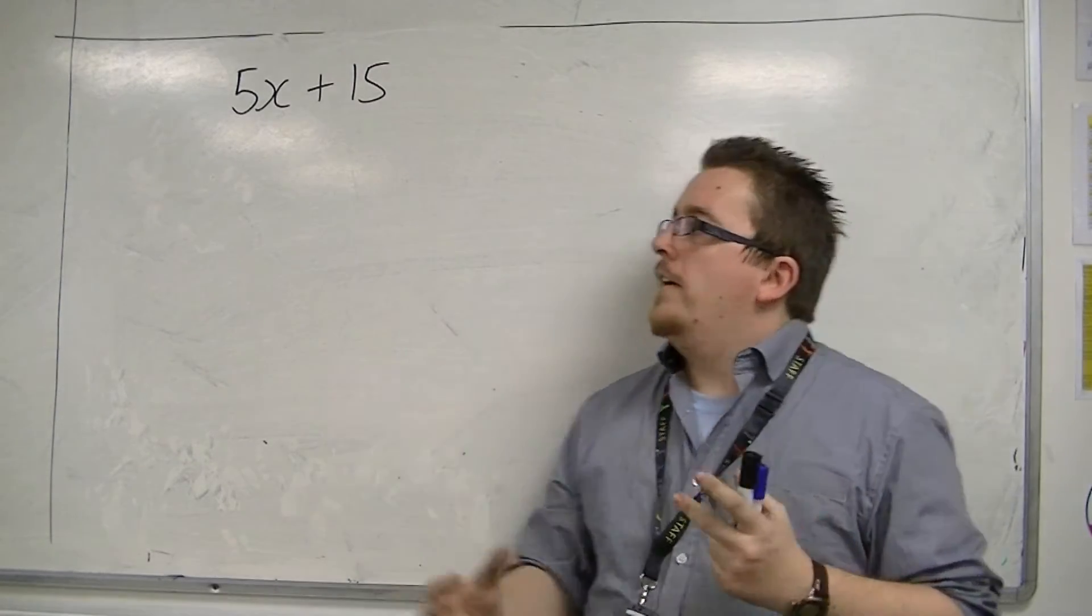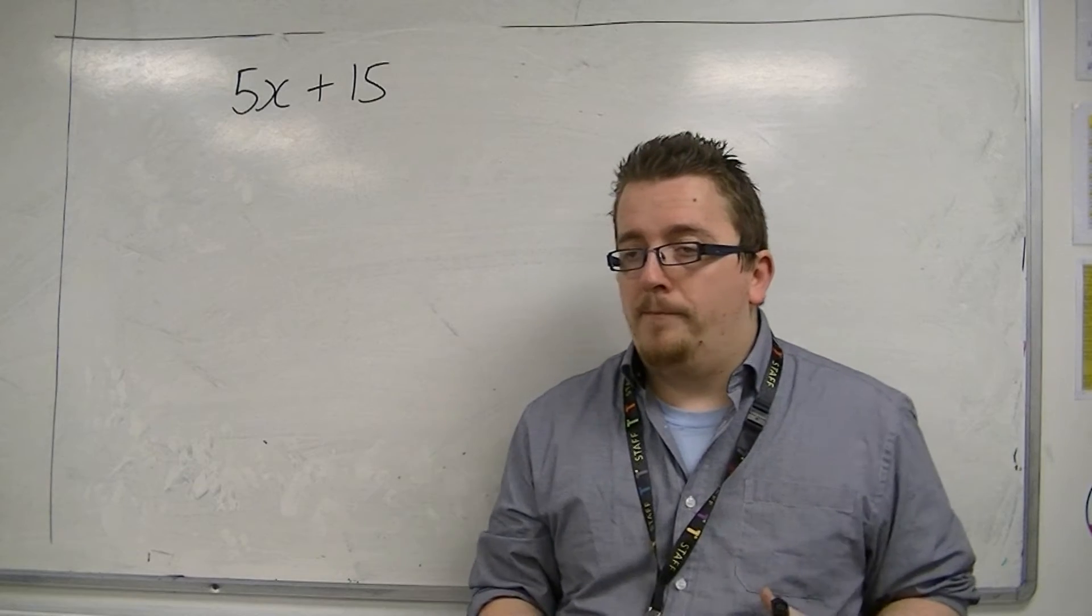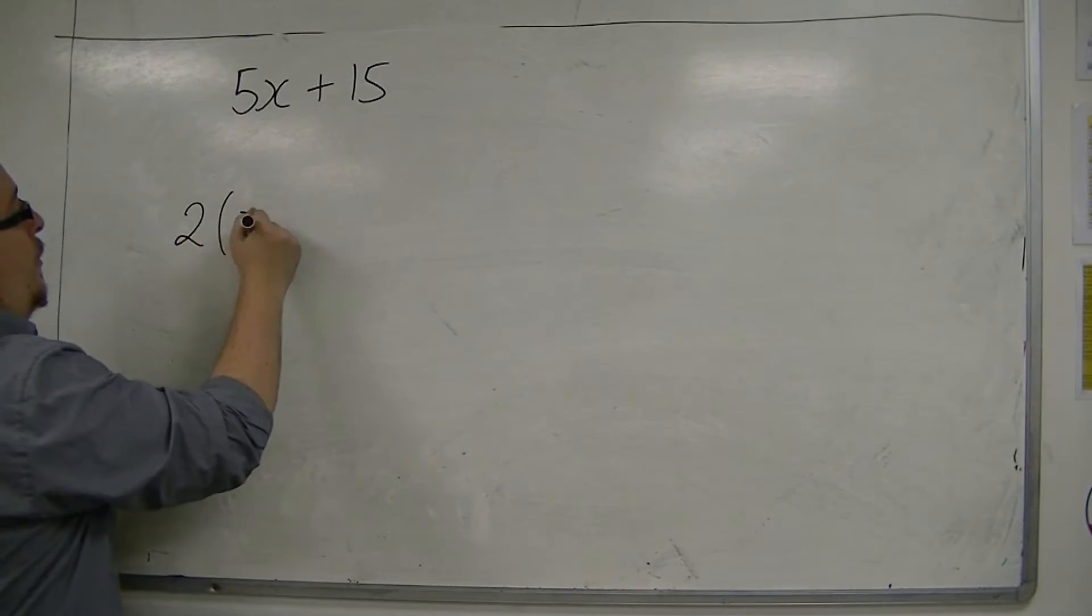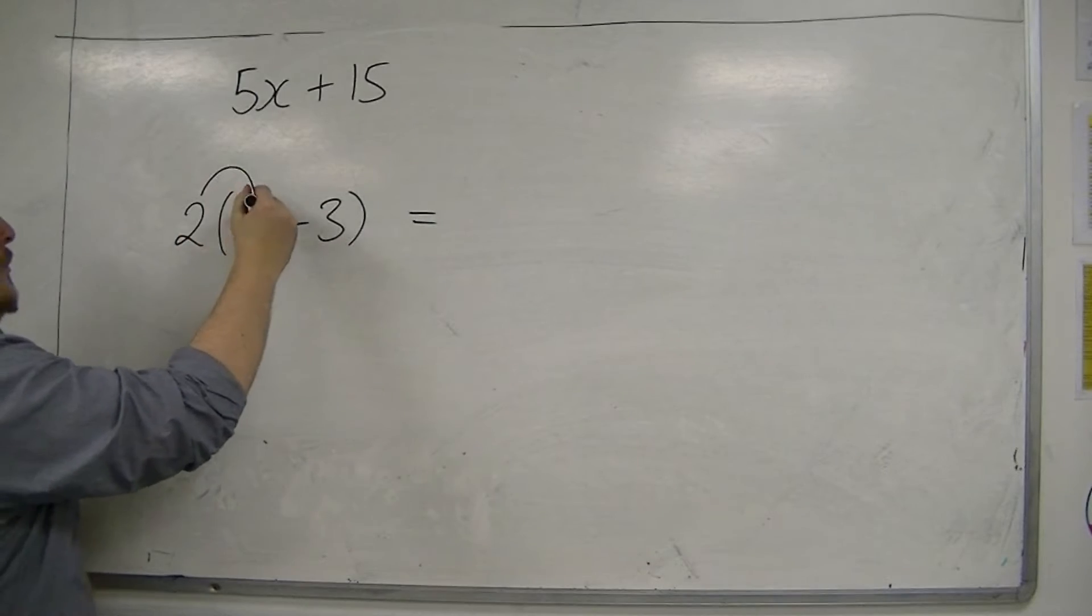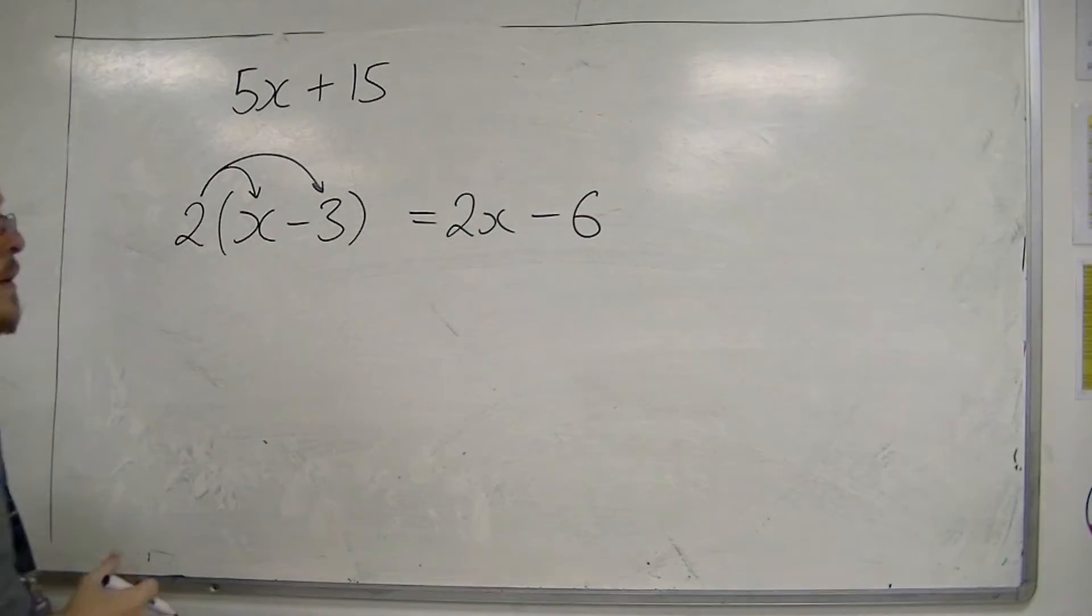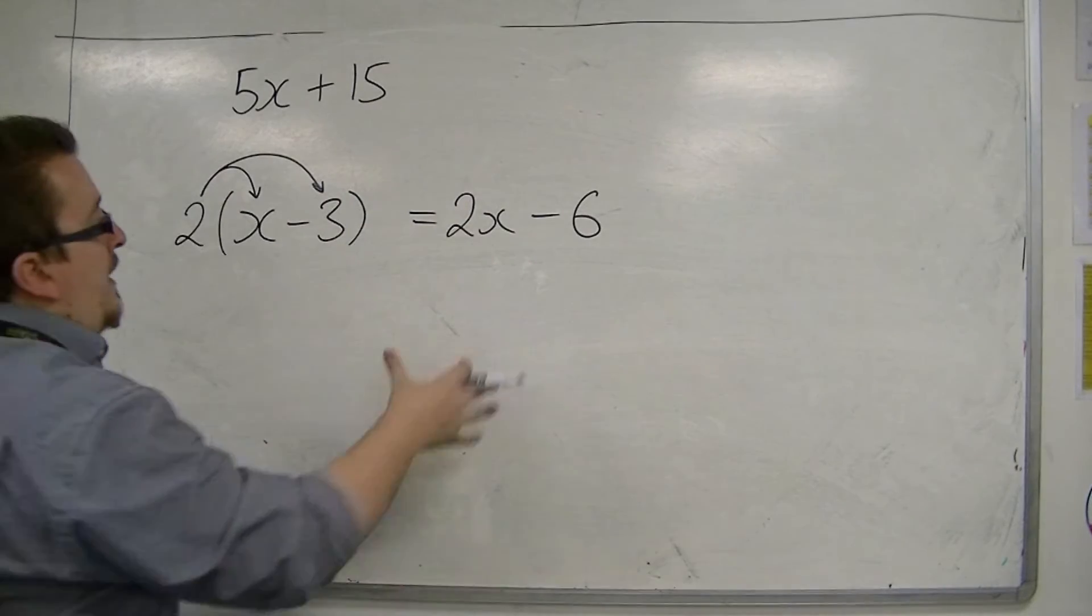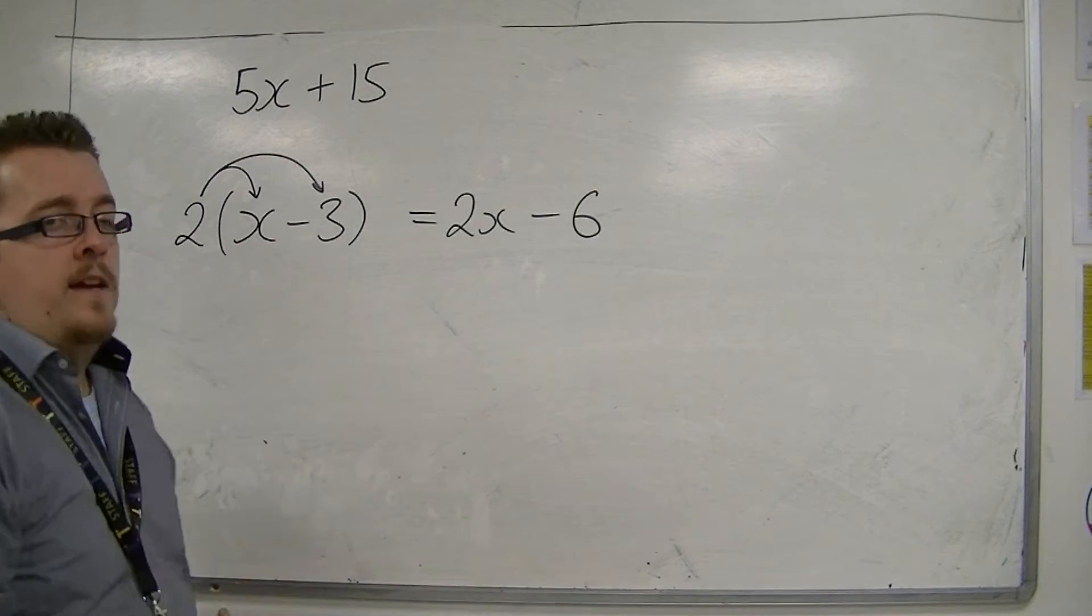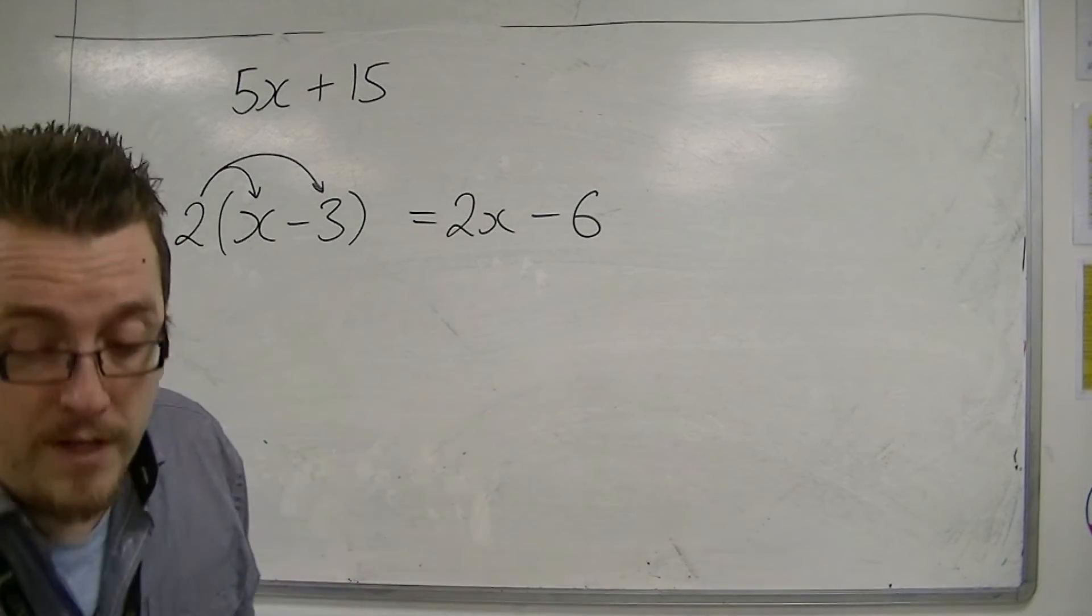So, if I expand brackets, the brackets disappear. If I started off with something like 2 lots of x minus 3, and I expand the brackets, so 2 lots of the x is 2x, and 2 lots of the minus 3 is minus 6, then the brackets disappear. The factorising is going from this stage backwards to this stage. Going back, so we're putting the brackets back in.